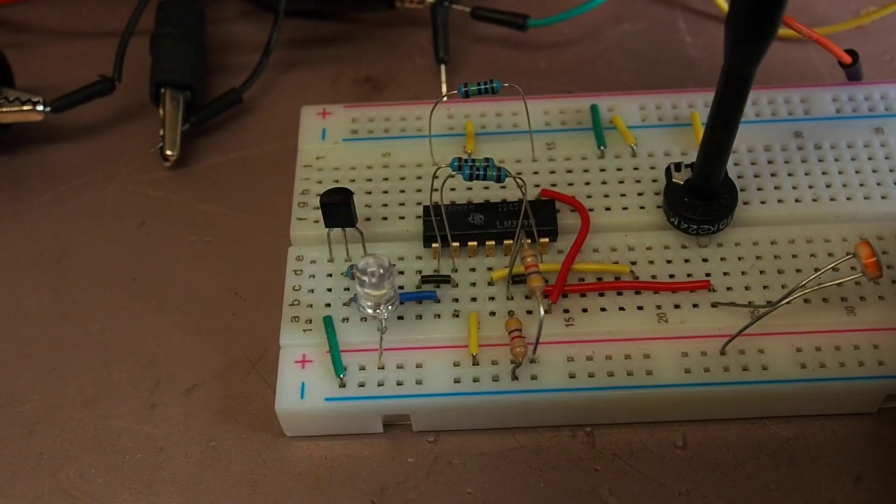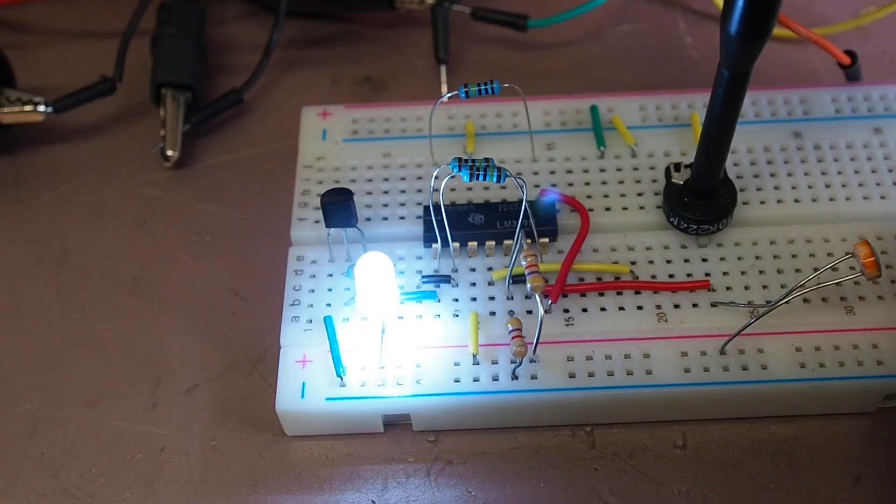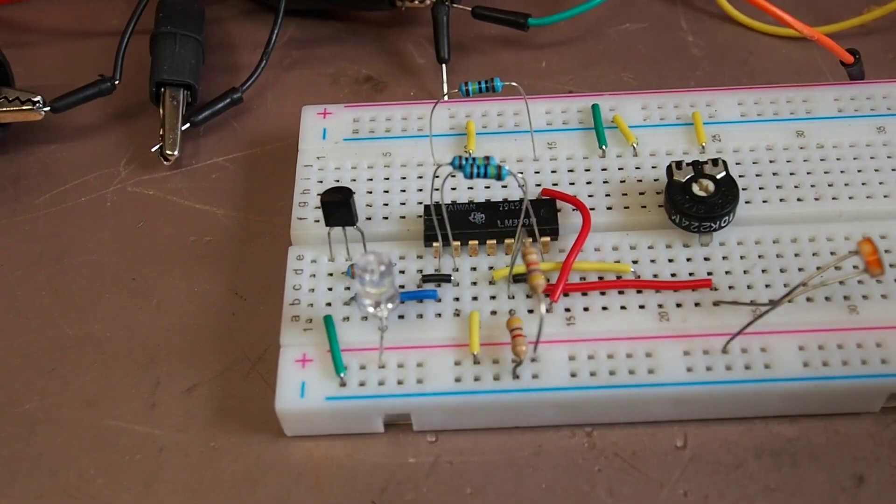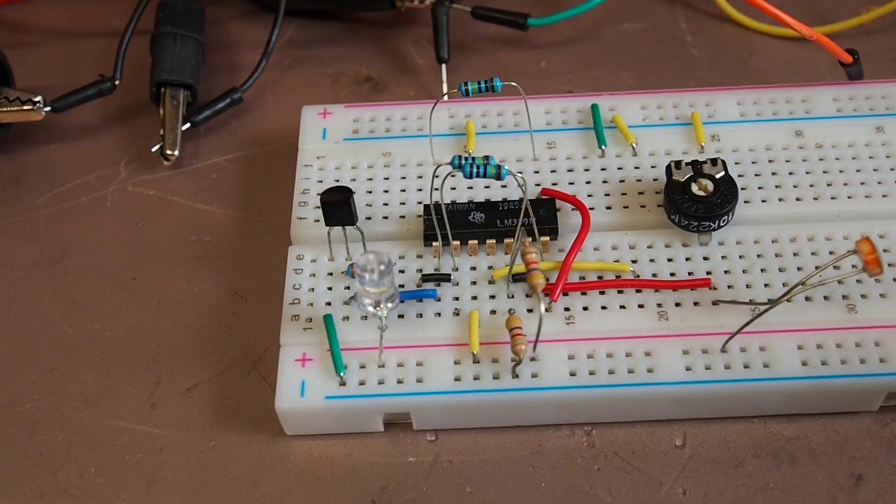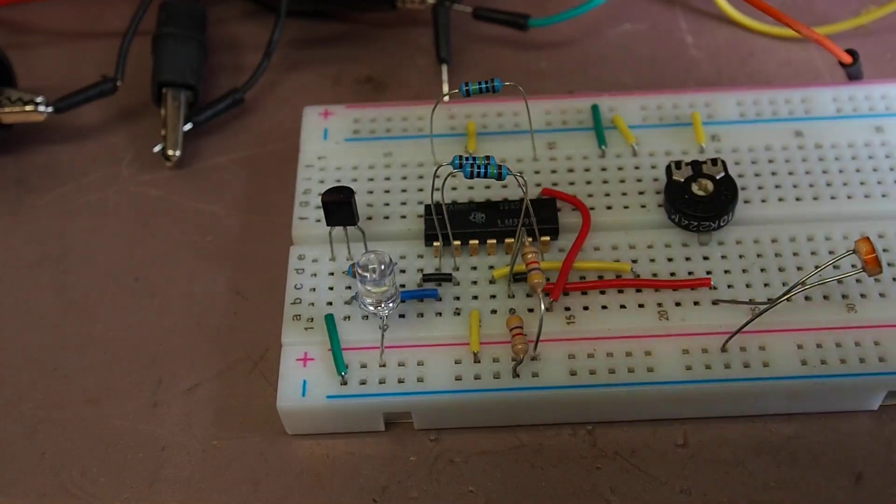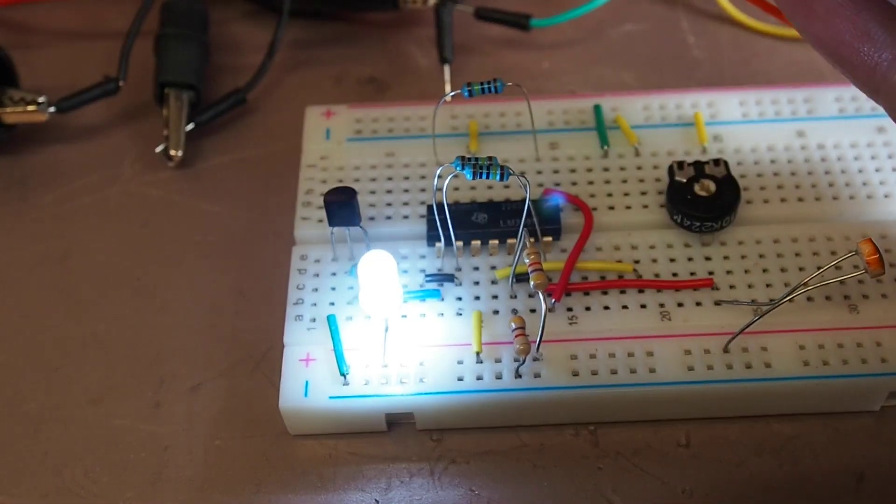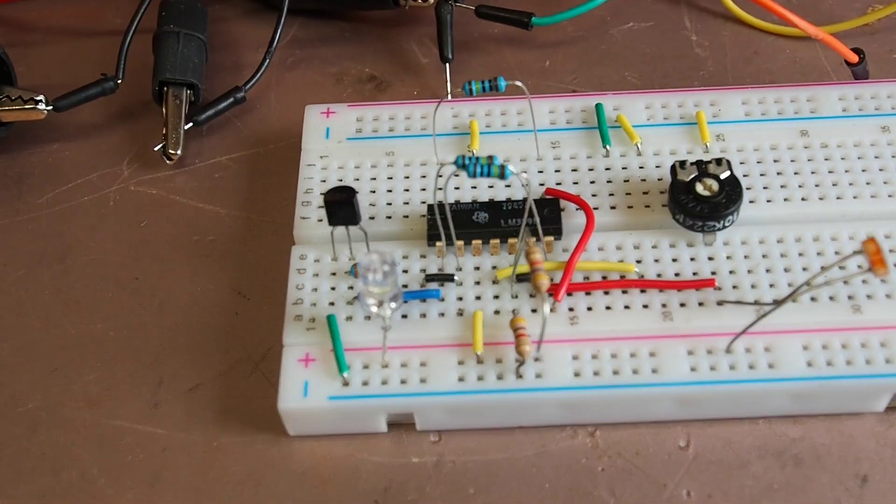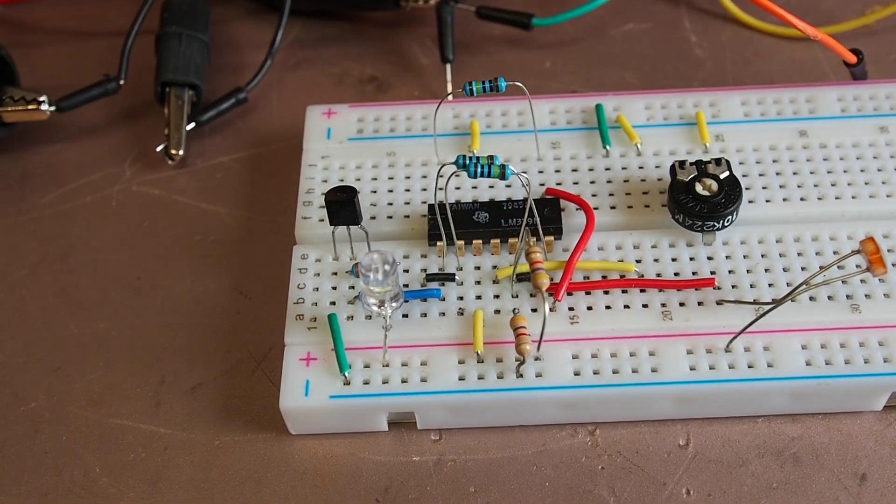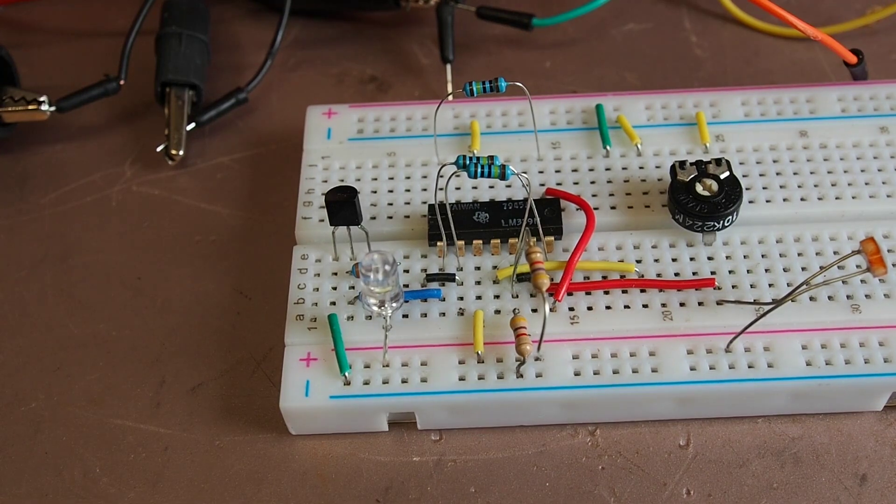Whereas I can reduce it to about there, where if I put that kind of shadow over it, it doesn't trigger. I have to get quite a lot closer, and there we go. So that's a practical application of an op amp, and I hope that's made a bit of sense.